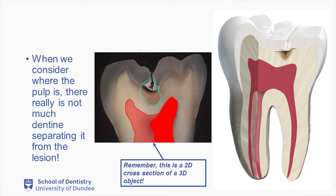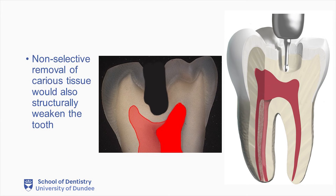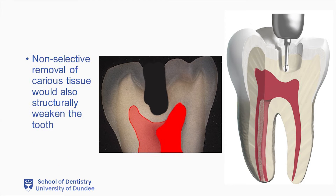Remember that this section is only a 2D representation of a 3D object. Previously, we practised non-selective or complete caries tissue removal. This would have removed a lot of tooth and potentially compromised or even exposed the pulp. Here you can see how much tissue would have been removed for this situation.